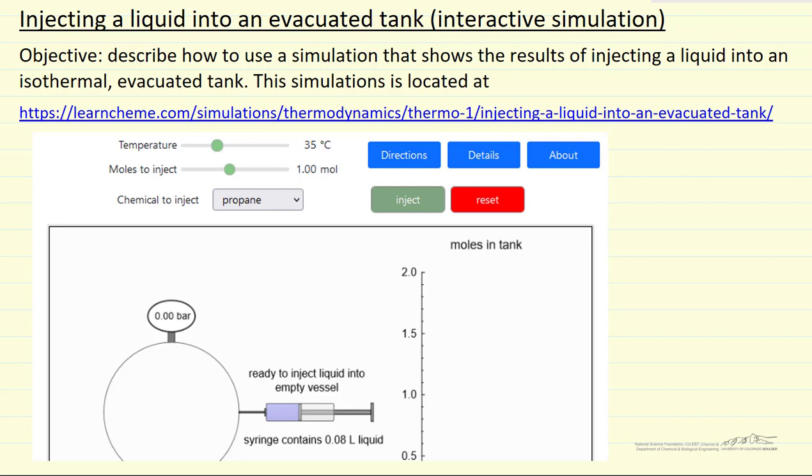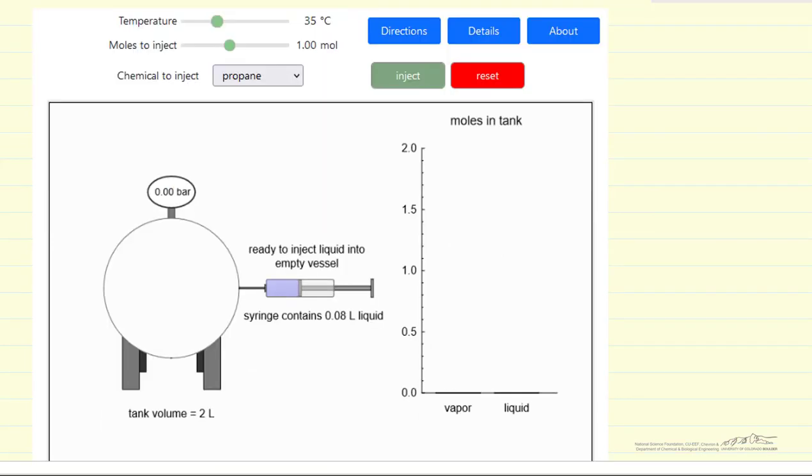I'm going to describe an interactive simulation that models the injection of a liquid into an evacuated isothermal tank. The simulation allows you to vary the temperature of the tank and the moles injected. In this case, if we inject one mole, that corresponds to 0.08 liters of liquid propane.